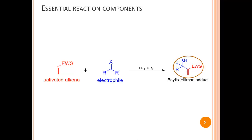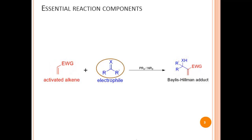An adduct is a product found by the direct combination of two separate reactants — in this case, an activated alkene and an electrophile — in such a way that there is a change in connectivity between the atoms, yet there is no loss of atoms from the reactants.